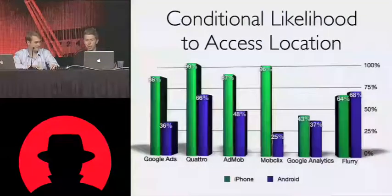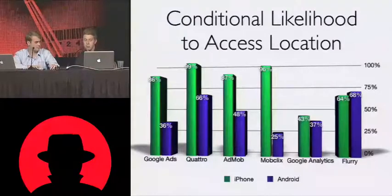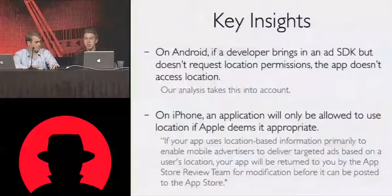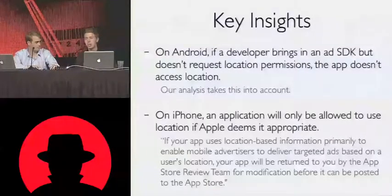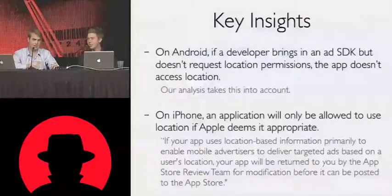This is really interesting. So let's zoom out and say: given that an application implements a certain third-party SDK, what is its likelihood to access location? These are the numbers we came up with for some pretty popular third-party SDKs on iPhone and Android. The numbers on Android were generally lower — that is partially an artifact of how we analyze things. For example, if a developer on Android brings in an ad SDK and that ad SDK wants to access location, but the developer doesn't request the location permission, the ad SDK doesn't get location. Which is a really cool aspect of Android — it's pretty focused on keeping the consumer's data private.